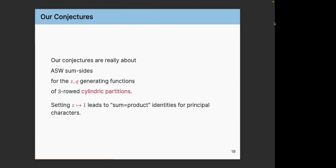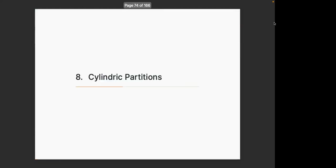Our conjectures are really about what are called cylindric partitions — specifically, rank-3 cylindric partitions, where the 3 comes from SL3-hat. Our conjectures are about bivariate generating functions, z, q generating functions. If you set z equal to 1, you get the product identities we are after.